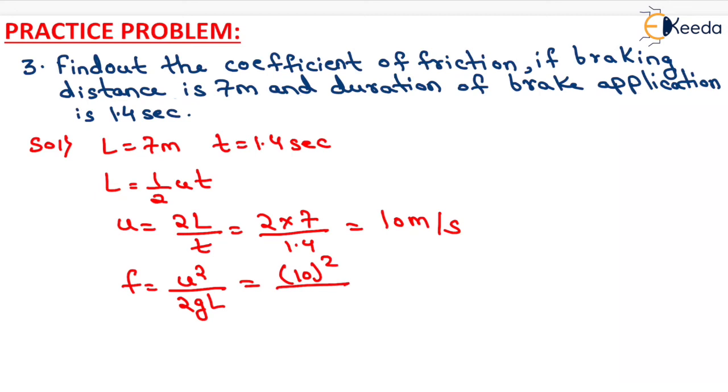So here 10 square upon 2 into 9.81 into the value of capital L will be equals to 7 meter. On solving this, we will have the coefficient of friction equals to 0.728 that will be the final answer of this question.